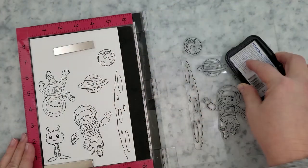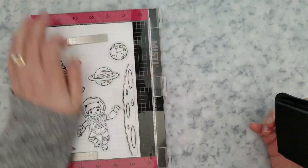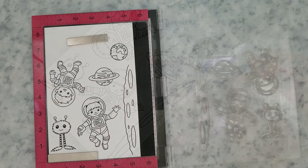I'm going to get started by stamping a few of the images onto some smooth cardstock using Memento Tuxedo Black ink. I'm using Copic markers to color the images starting with the moon.